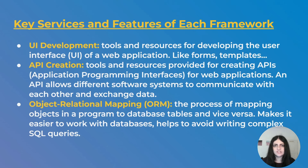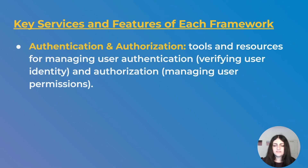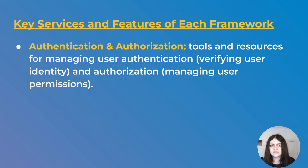Another key feature is Object Relational Mapping, or ORM — the process of mapping objects in a program to rows in a database. This makes it much easier to work with data and build data-driven applications, and helps avoid writing complex SQL queries. Not all frameworks provide it, so we'll see which ones do. Next is authentication and authorization — allowing users to sign in and sign up, and giving different users different permissions to access different parts of the app.